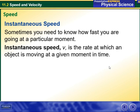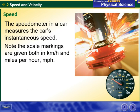Instantaneous speed: Sometimes you need to know how fast you are going at a particular moment. Instantaneous speed, v, is the rate at which an object is moving at a given moment in time.